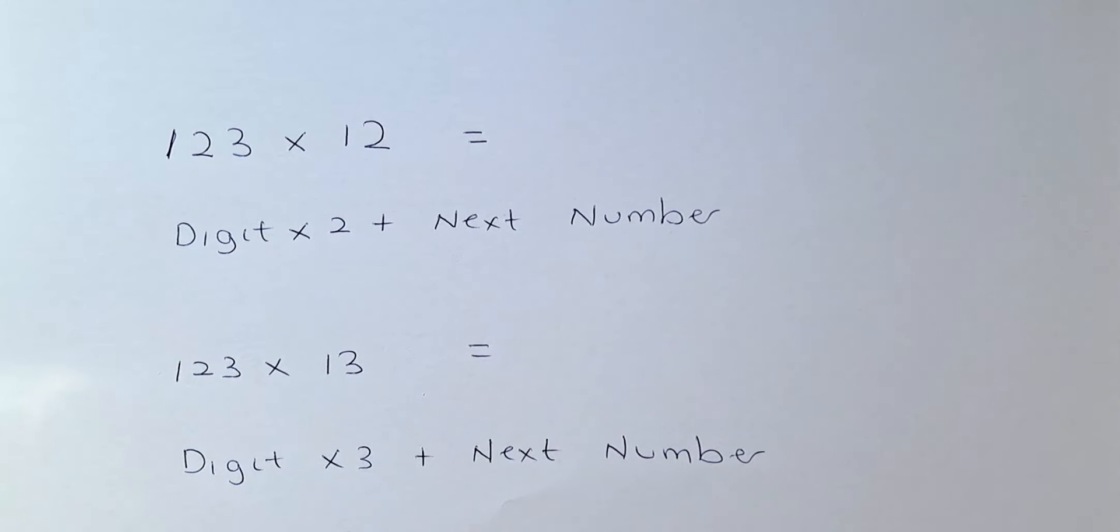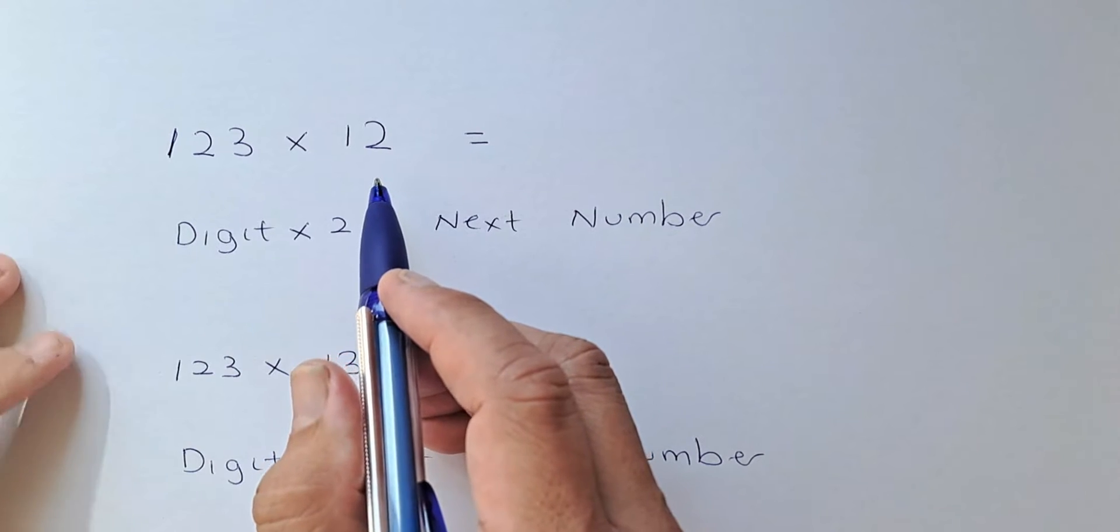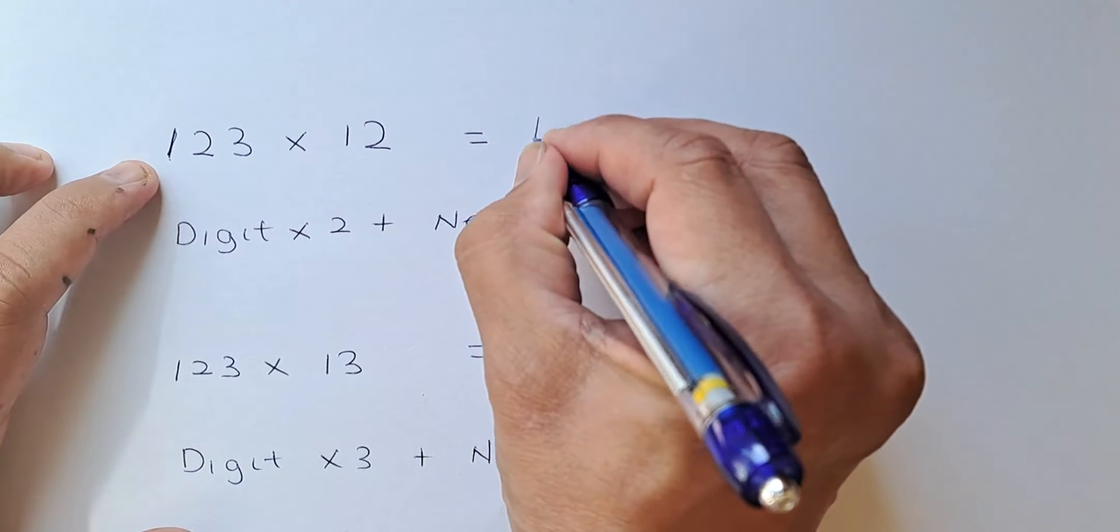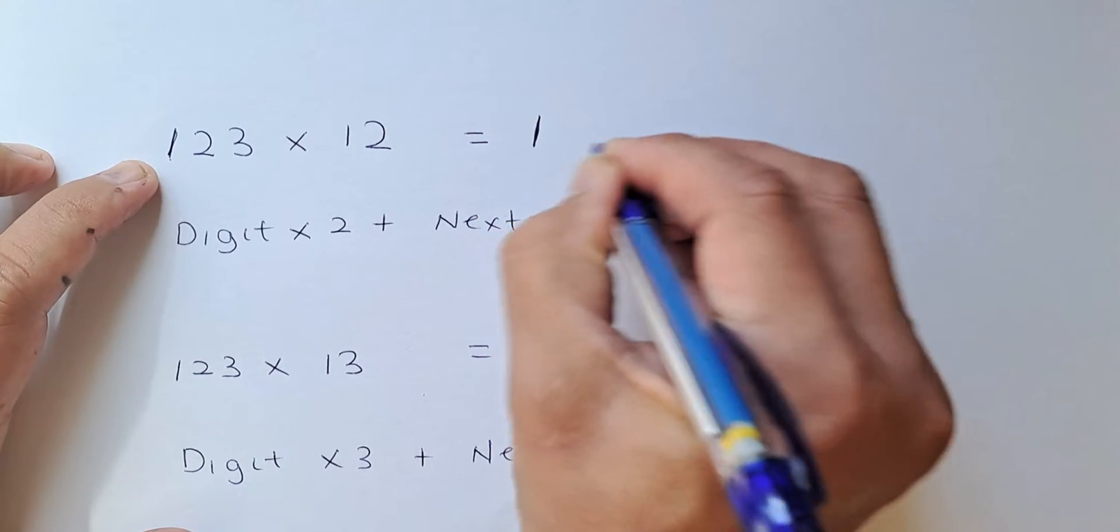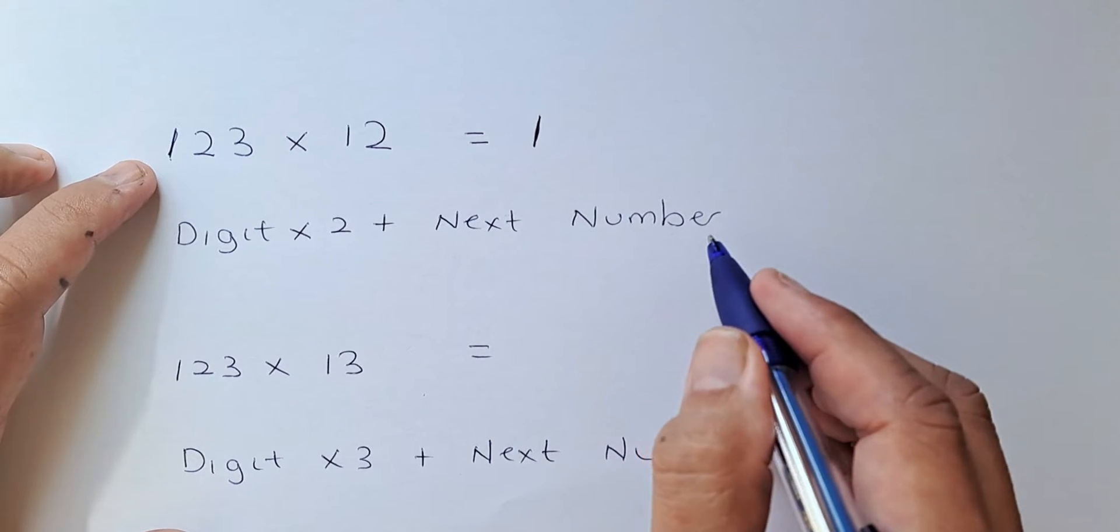A recap of how you multiply by 12 is 123 times 12. You need to first take the first digit and the first answer is going to be 1. The following digit is based on this formula: digit times 2 plus the next number.